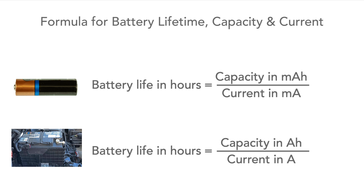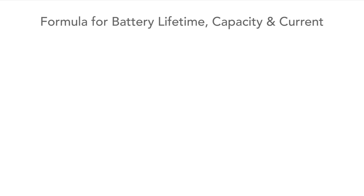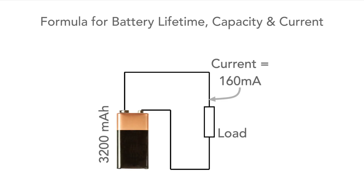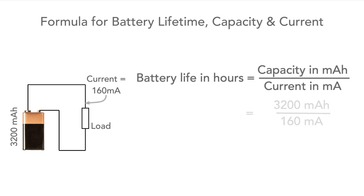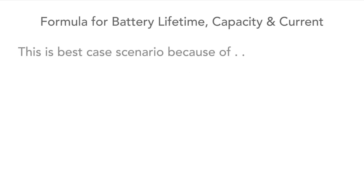The units of current must be the same on the top and the bottom of the equation. As an example, if a battery with a capacity of 3200 milliamp hours is required to provide a current of 160 milliamps, then we can enter the figures into the formula and discover that the battery should be able to provide this current for 20 hours.